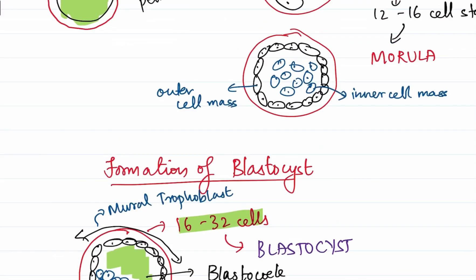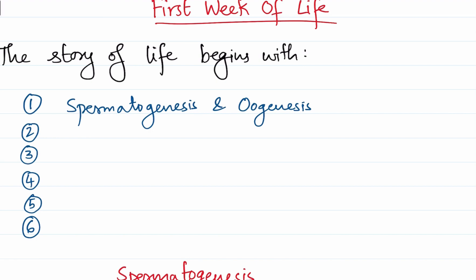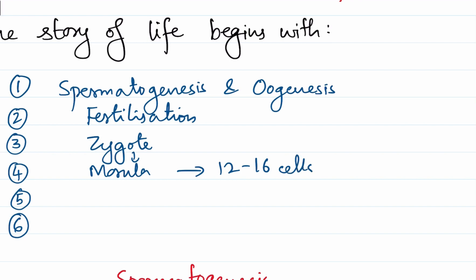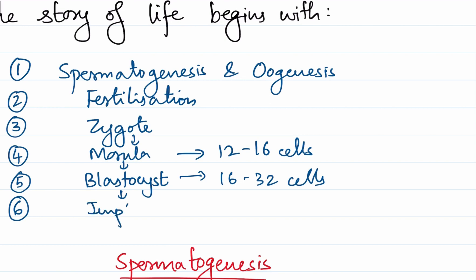To summarize the events of the first week of life: the story begins with spermatogenesis and oogenesis, and the sperm and ovum undergo fertilization to produce the zygote. The zygote develops into the morula at 12 to 16 cells, with a loosely arranged inner cell mass and densely packed outer cell mass. The morula develops into the blastocyst at 16 to 32 cells, nourished by uterine fluid. The blastocyst then undergoes implantation at the endometrium, completing the first week of life.